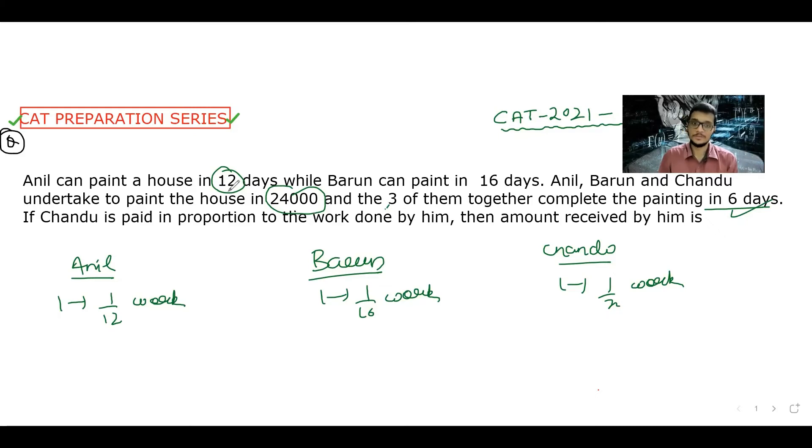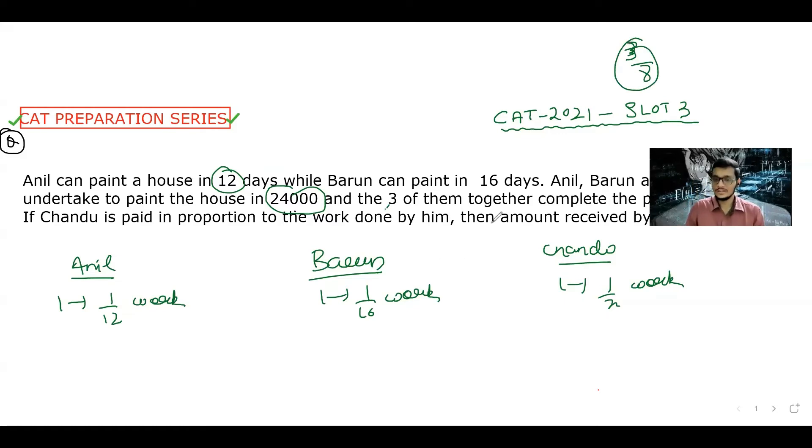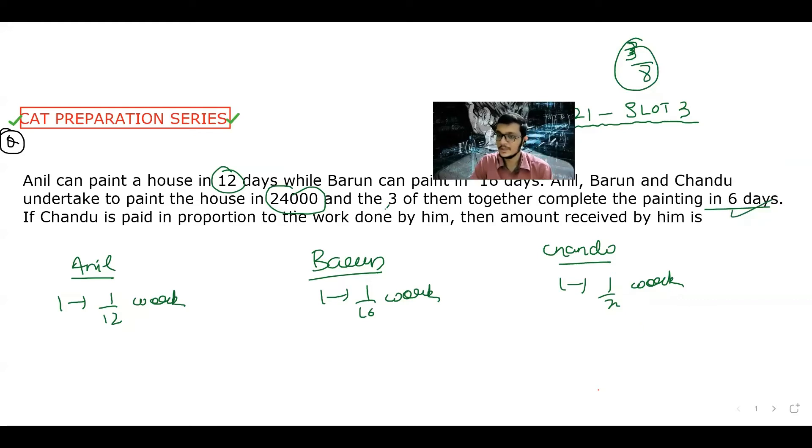When they work together, how effective are they? If you work together, you add the individual work rates. In this question, the three of them together will finish the work in 6 days. So three of them together do 1/6th work in one day.